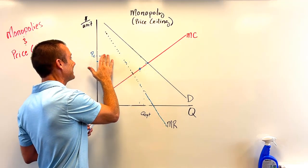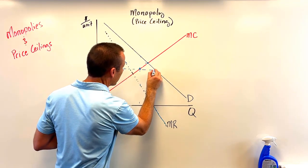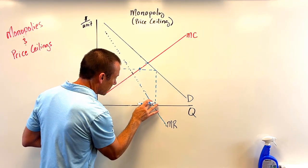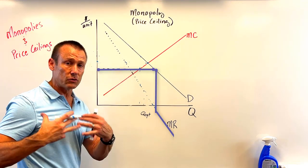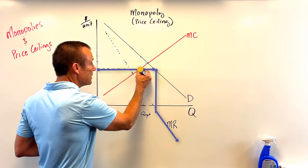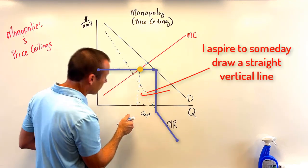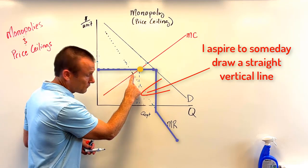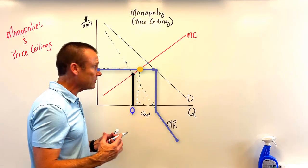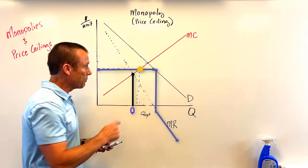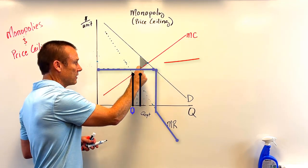Now we're going to put the price ceiling in yet another place — right here, going all the way to the demand curve, then drop down. That is now my MR curve, and I still use MR equals MC to find output. Here's my MR equals MC intersection — that's my level of output. Output still increased compared to the unregulated monopoly: you can see that old MR line and where the old output was, and the new output is higher.